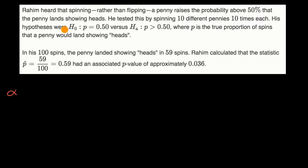His hypotheses were, his null hypothesis is that by spinning your proportion doesn't change rather versus flipping, it's still 50%. And his alternative hypothesis is that by spinning your proportion of heads is greater than 50%. Where p is the true proportion of spins that a penny would land showing heads.